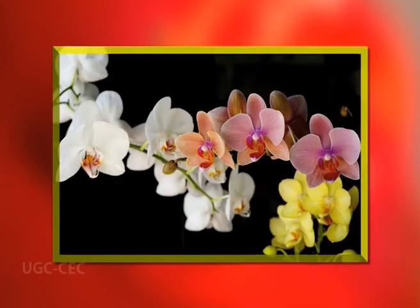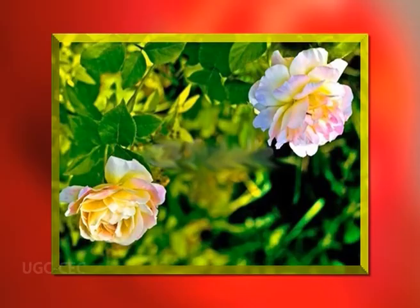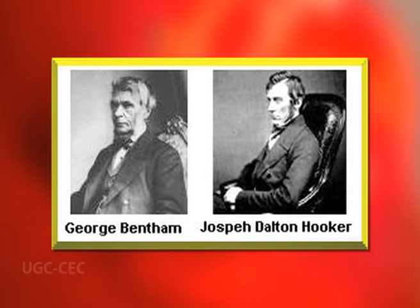The apetalous and catkin-bearing dicotyledons were considered primitive relative to flowers which bear petals, and simple unisexual flowers were considered primitive. These views are however not acceptable to most recent phylogeneticists. The unification of polypetaly and apetaly, recognized as separate by Bentham and Hooker, was certainly a forward step.